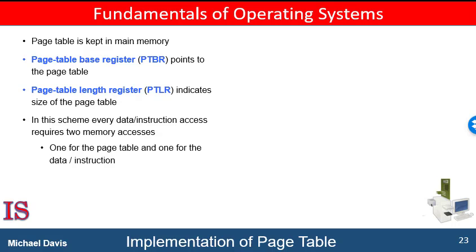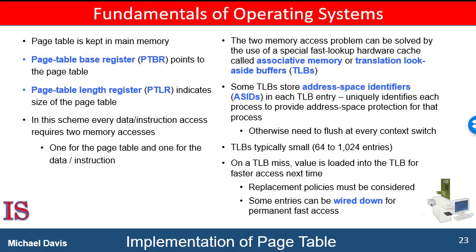Although storing the page table in main memory can yield faster context switches, it may also result in lower memory access time. To access location i, we must first index into the page table using the value in the page table base register offset by the page number for i — requiring one memory access. It provides the frame number, combined with the page offset to produce the actual address. With this scheme, two memory accesses are needed: one for the page table entry and one for the actual data. Memory access is therefore slowed by a factor of two, a delay considered intolerable under most circumstances.